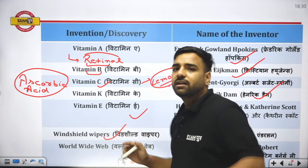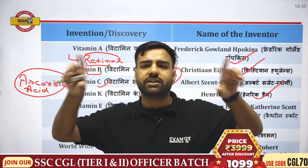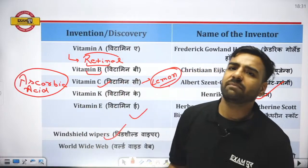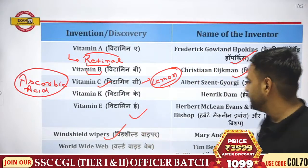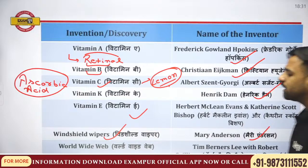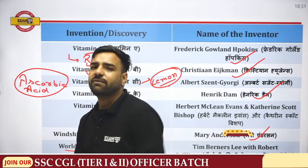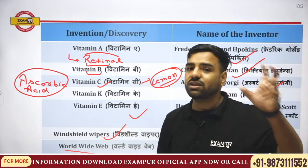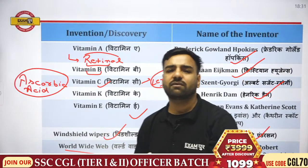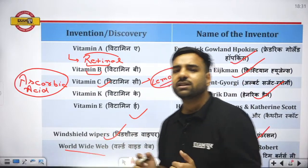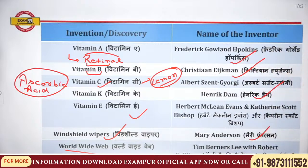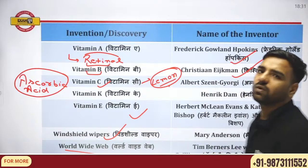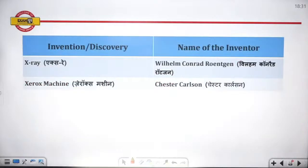Vitamin K was discovered by Henrik Dam. Vitamin E was discovered by Herbert McLean Evans and Katherine Scott Bishop. Windshield wipers were discovered by Mary Anderson. WWW — worldwide web — was discovered by Tim Berners-Lee and Robert Cailliau. This question was asked in the Intelligence Bureau examination.